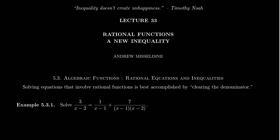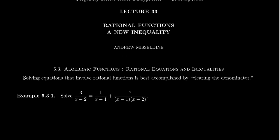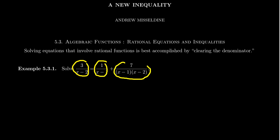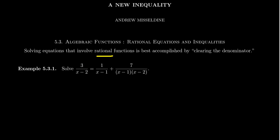We saw a little bit of that while we were graphing — sometimes we had to decide whether a graph crossed its horizontal asymptote. The basic idea when you solve a rational equation is called clearing the denominator. Because you have fractions with denominators that might have variables in them, the best way to solve this equation is to get rid of the denominators as much as possible. That way we can turn a rational equation into a polynomial equation.